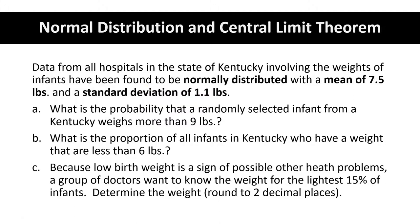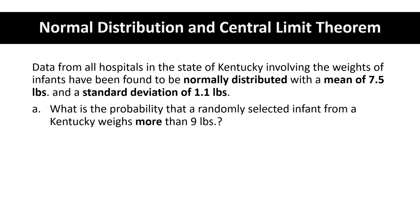Part A: what is the probability that a randomly selected infant from Kentucky weighs more than nine pounds? Our first step is to take nine pounds, that's our x, and change it to a z-score.